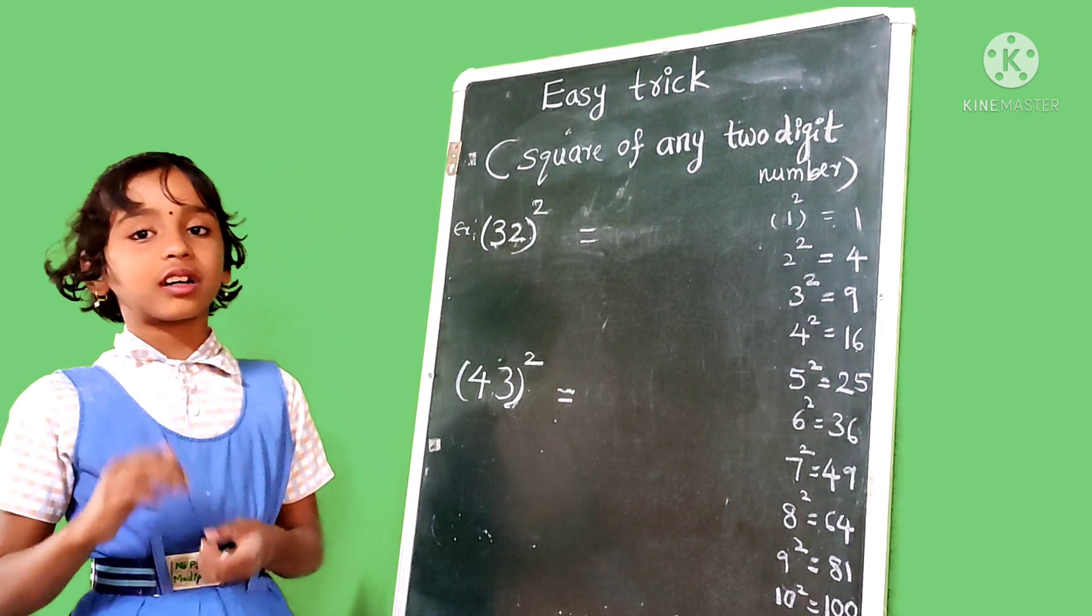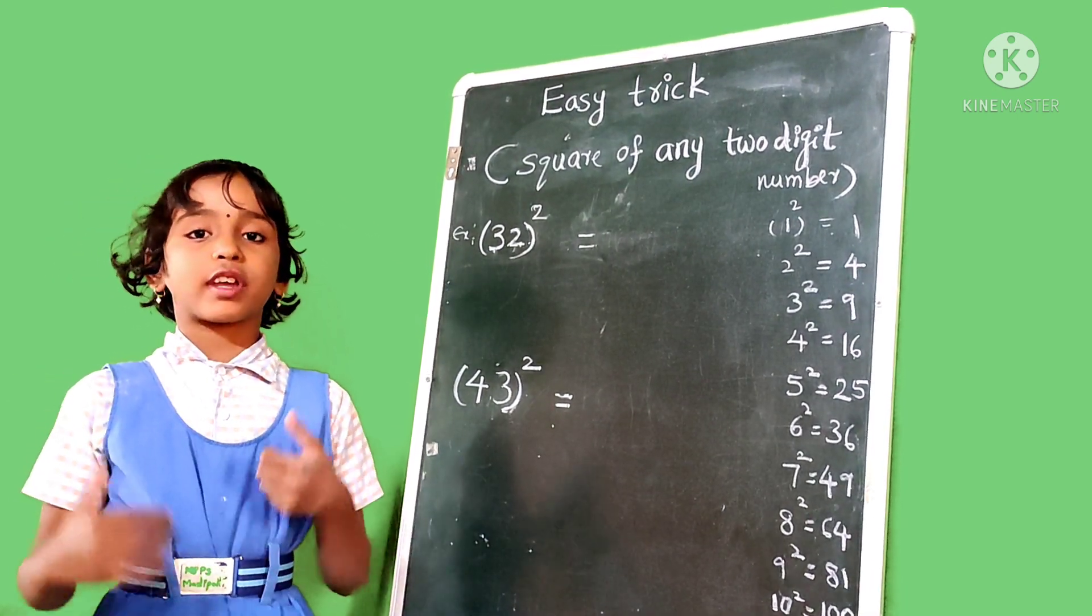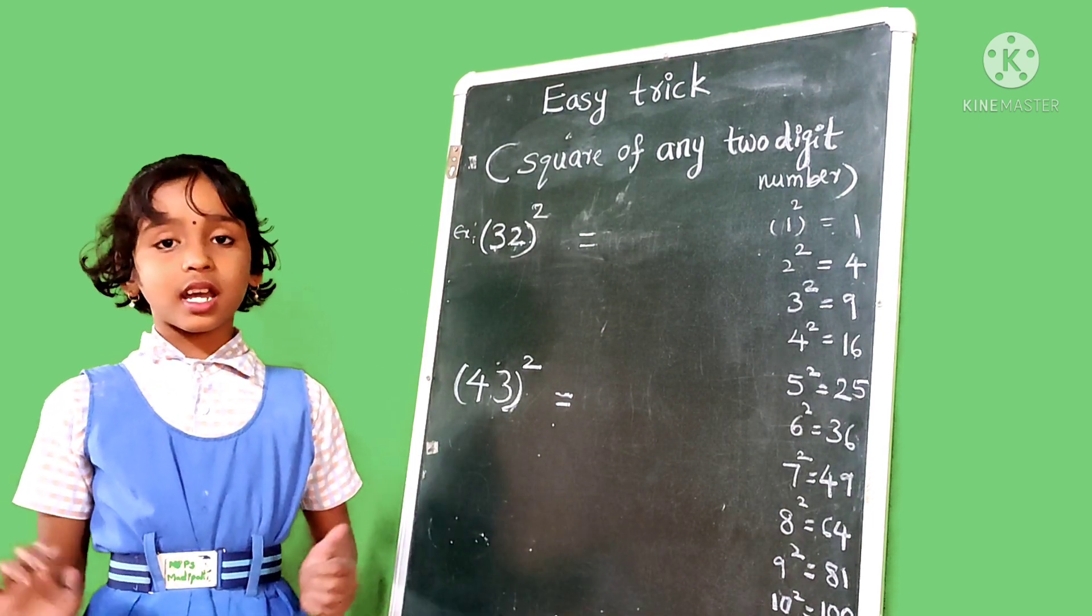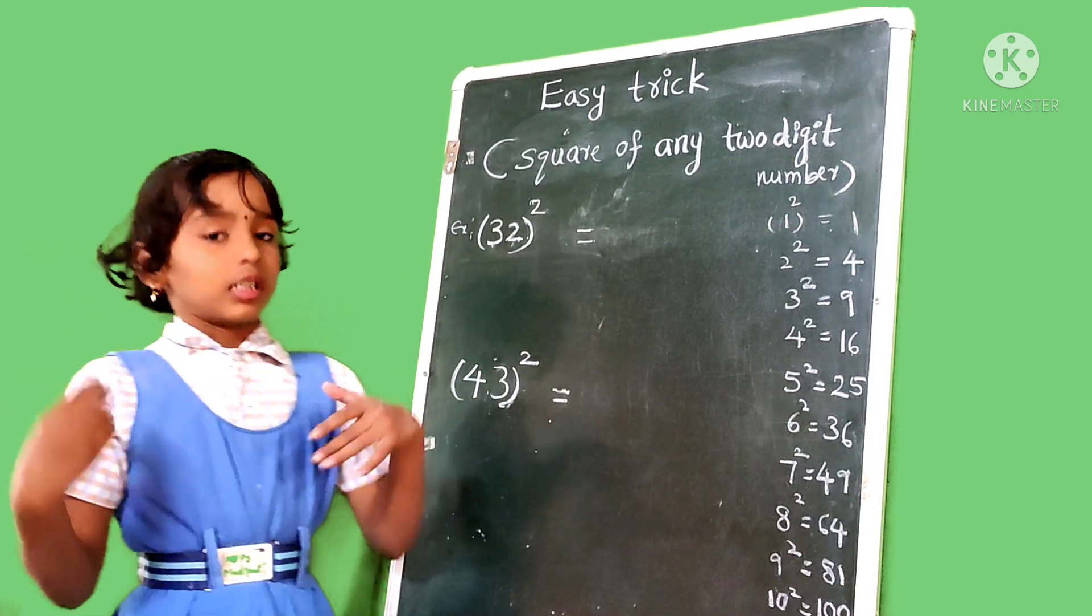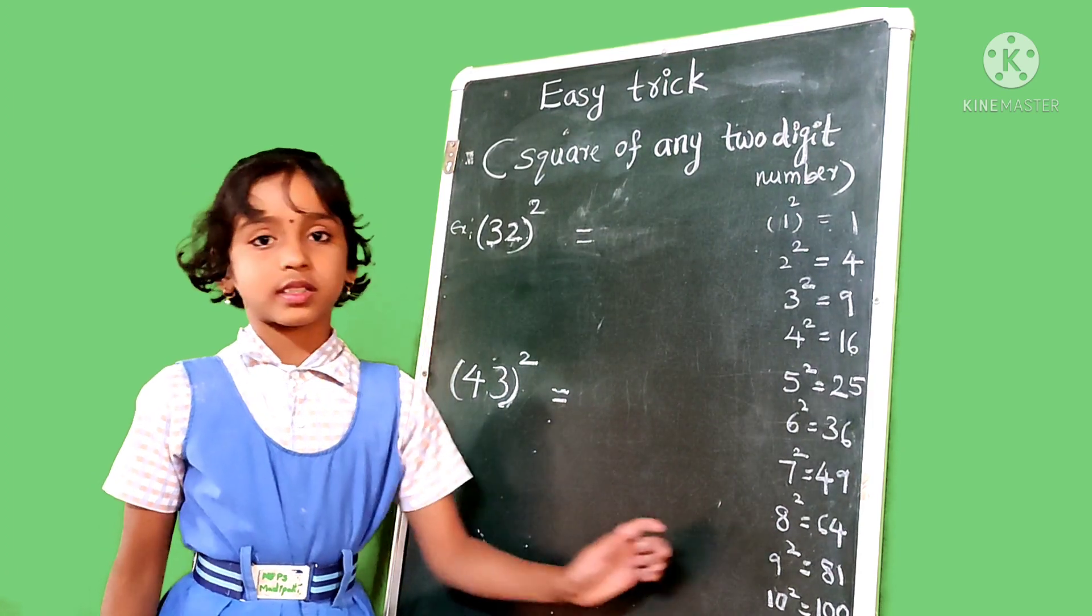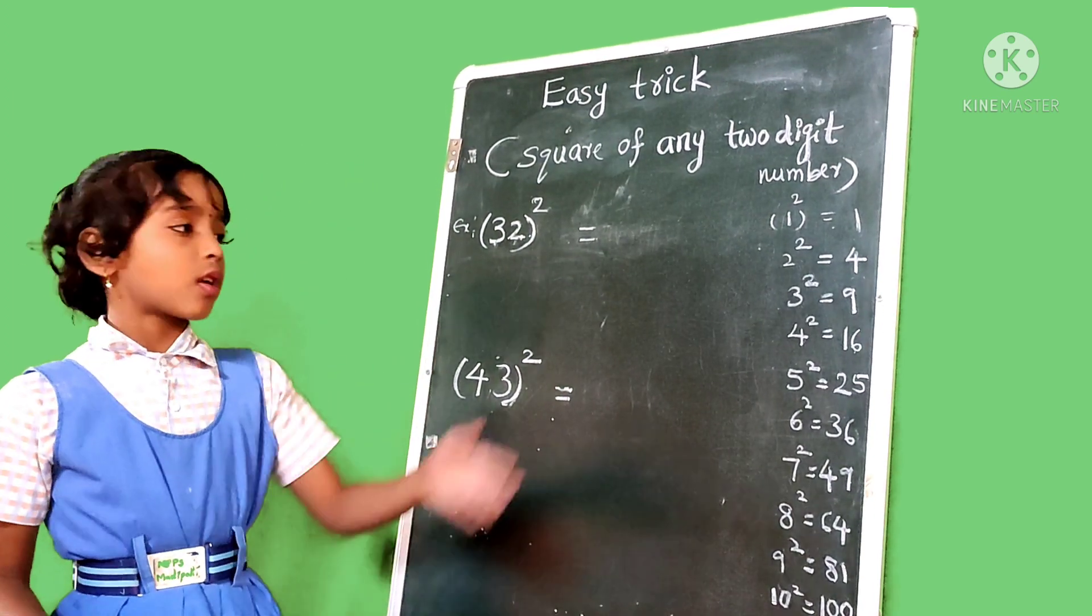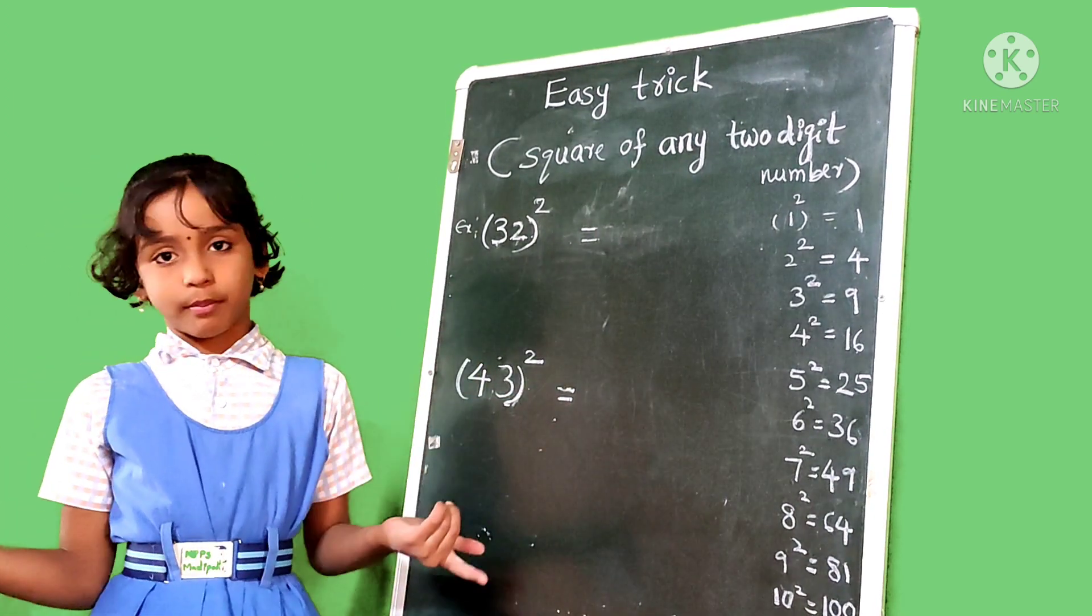Hi friends, today we are going to learn an easy trick for the square of any two-digit number. Now let's start. First of all, we learn 1 to 10 squares and remember them also. Then all these 1 to 10 squares we put in mind.